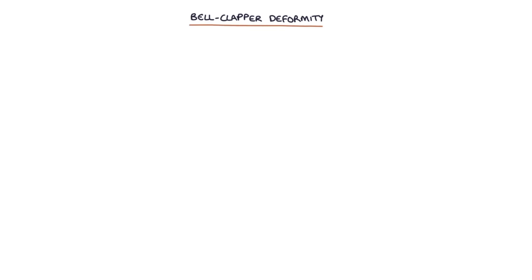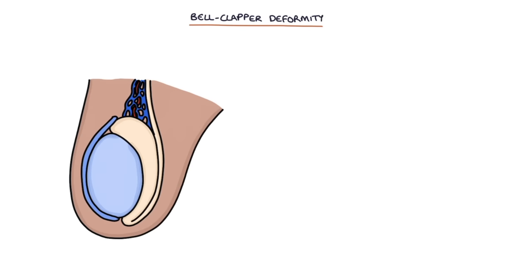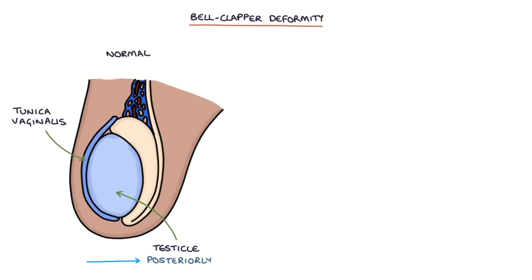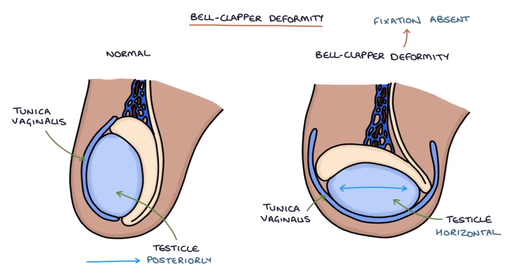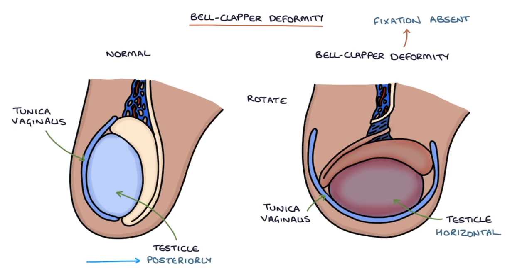A bell clapper deformity is one of the causes of testicular torsion. Normally the testicle is fixed posteriorly to the tunica vaginalis, so the tunica vaginalis sits in front of the testicle, attached. A bell clapper deformity is where the fixation between the testicle and the tunica vaginalis is absent. The testicle hangs in a horizontal position, like a bell clapper, instead of the typical more vertical position. The testicle is also able to rotate within the tunica vaginalis, twisting at the spermatic cord.